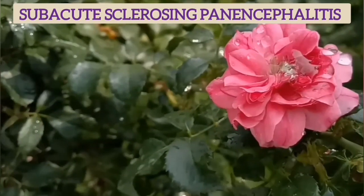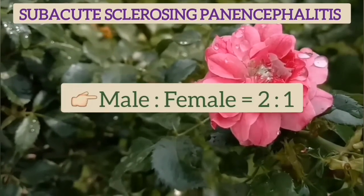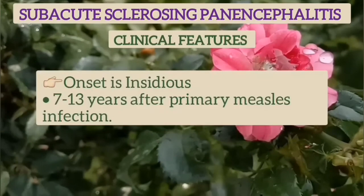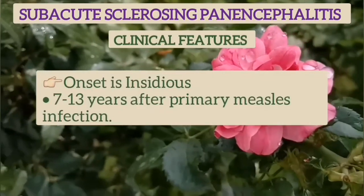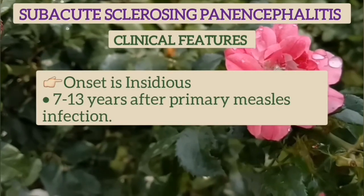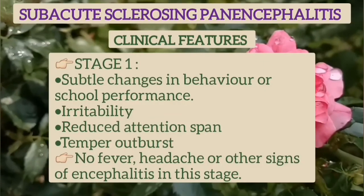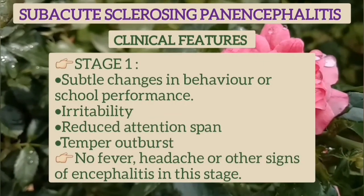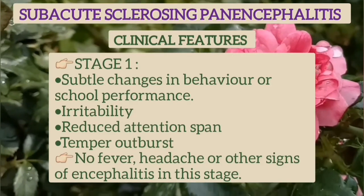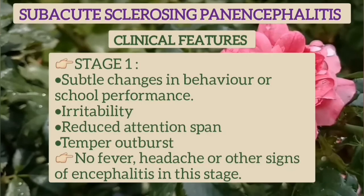SSPE is more common in males, with a male-to-female ratio of 2:1. The onset occurs 7 to 13 years after primary measles infection. It contains 4 stages. In stage 1, there are subtle changes in behavior or school performance, irritability, reduced attention span, and temper outbursts. There is no fever, headache, or other signs of encephalitis in this stage.